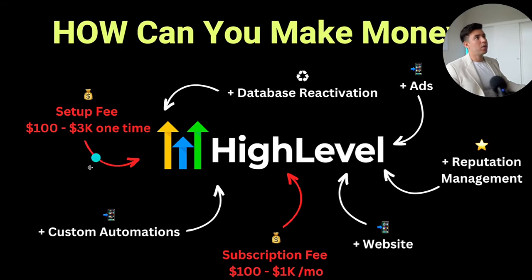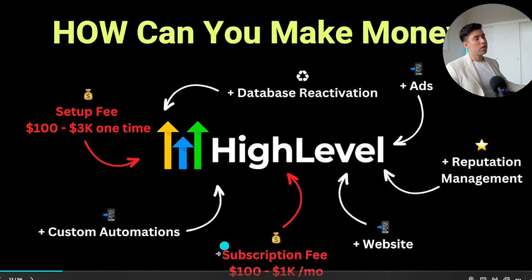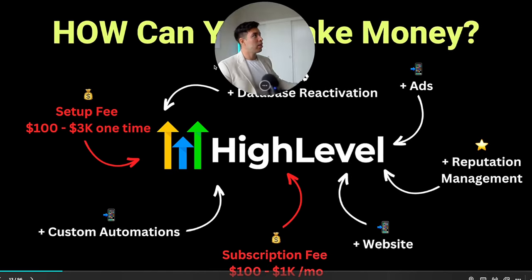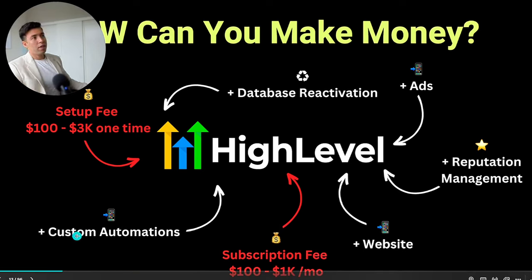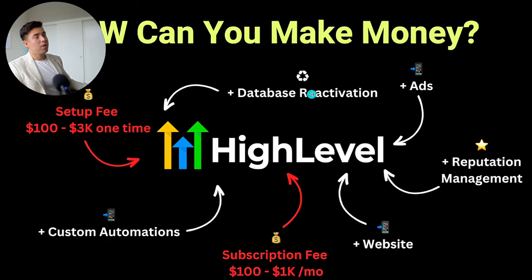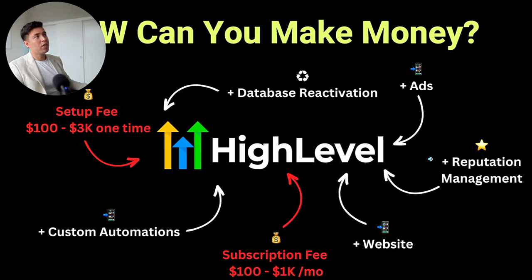How can you make money with Go High Level? First, you can charge a one-time setup fee, then onboard clients to a subscription model — charging them a monthly fee for the software just like they'd pay HubSpot $200–$300 a month, except they pay you instead. You can also do custom automations, database reactivation — taking their client list and running email campaigns — run their ads and use Go High Level for tracking.